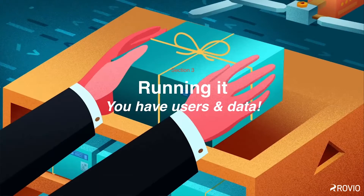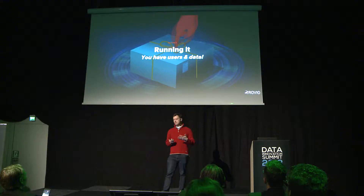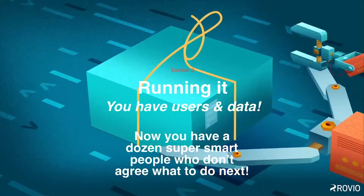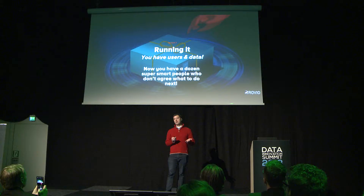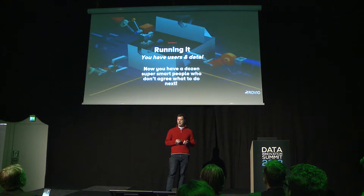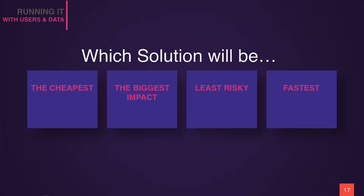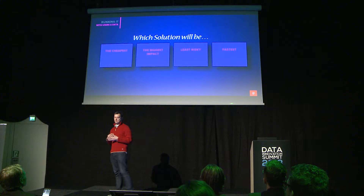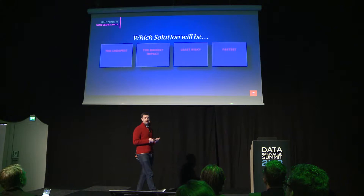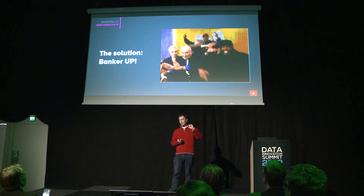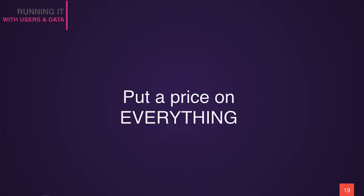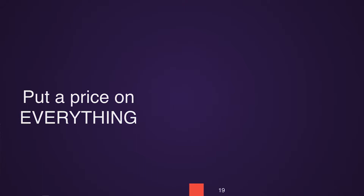You have a product up, it's running, you have users, you have data, and probably you have a dozen or more very clever, very experienced people arguing about what to do next. That's the key part of the process, at least in my opinion. How do you take all this mess, all this data, and find out which is going to be the cheapest, least risky solution that has the biggest impact and can be done the fastest? The method we use is stolen from finance: it's very, very boiled down to putting a price on everything.